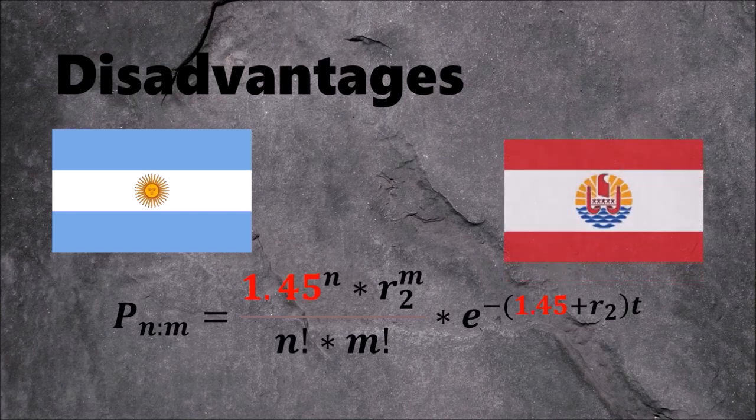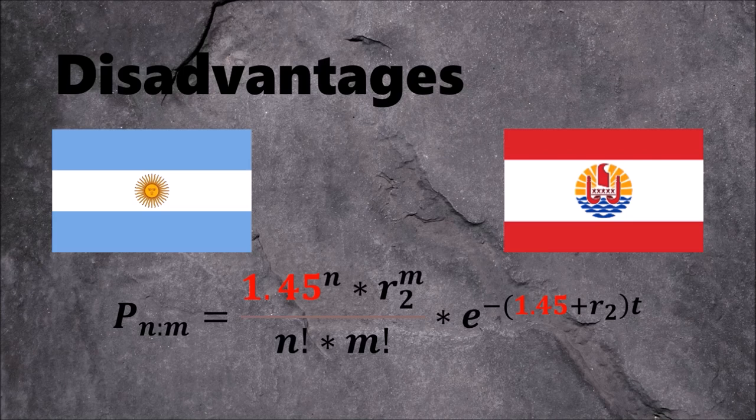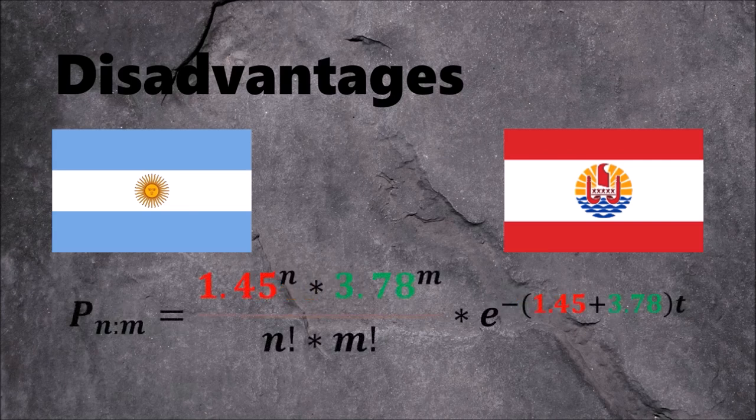At the same time, we look at the fictional games of Tahiti. They win against other weaker football nations from Oceania each game convincingly, resulting in an average goal value of 3.78.